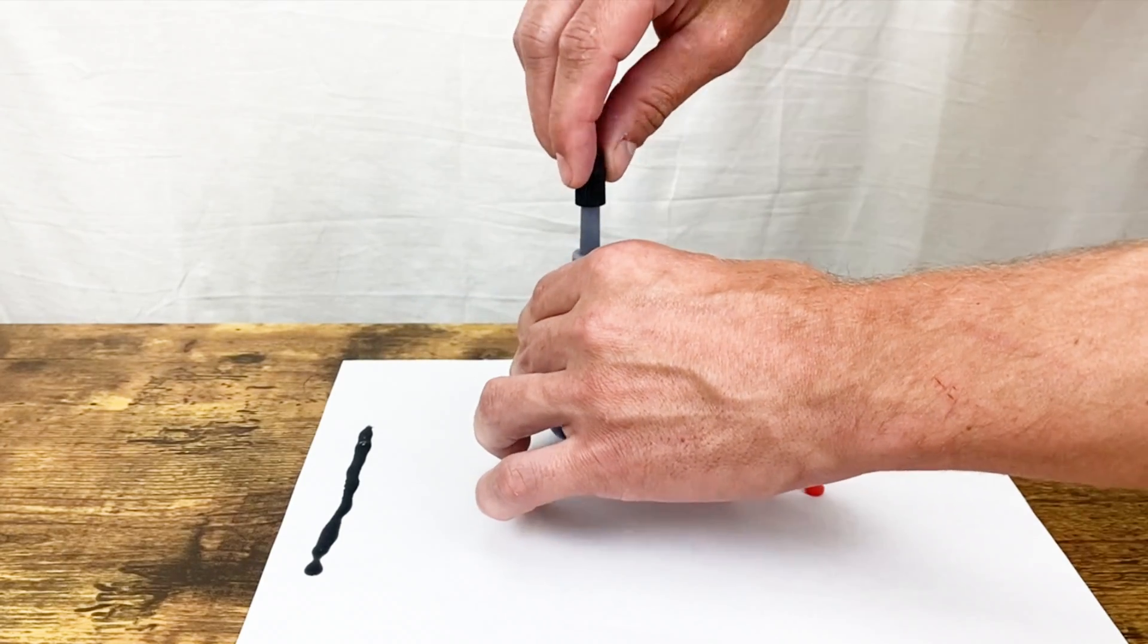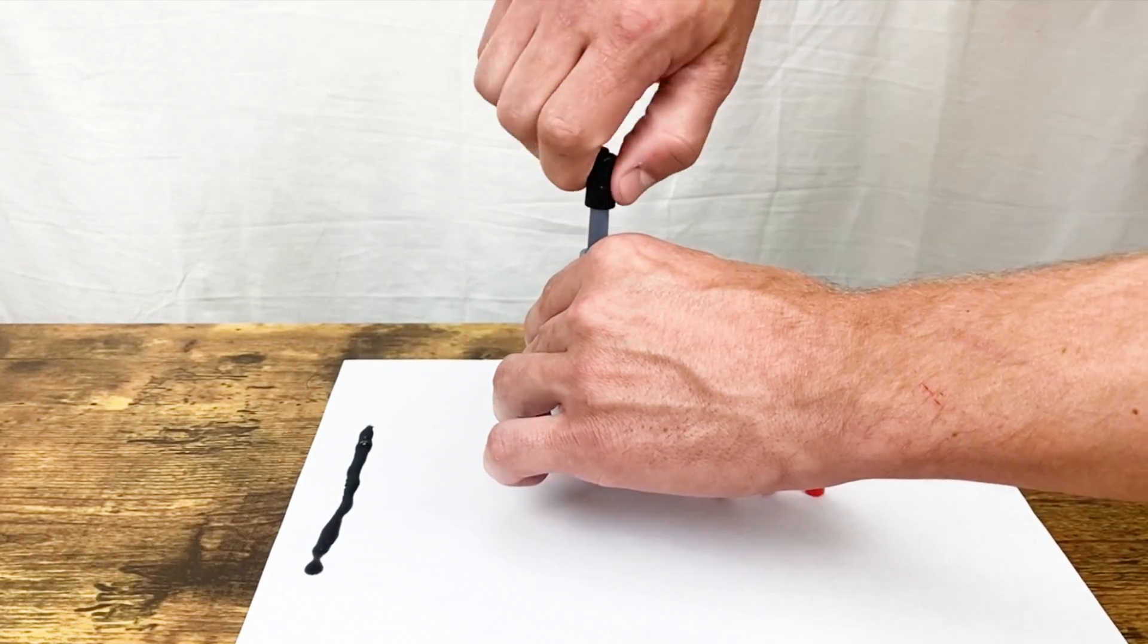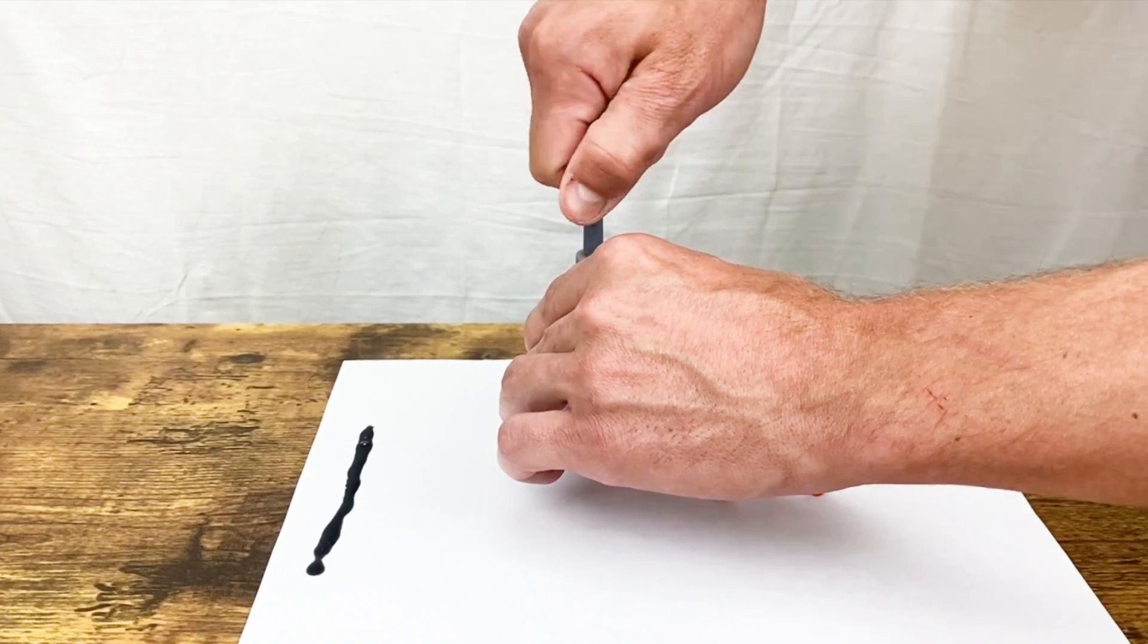Today we're going to look at precision dispensing with superglue. To get started, attach the lure lock adapter to the superglue bottle.